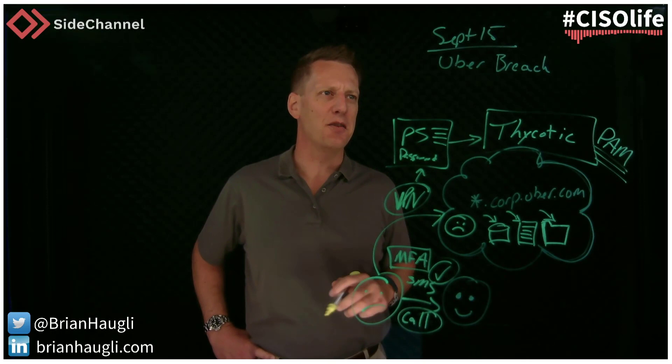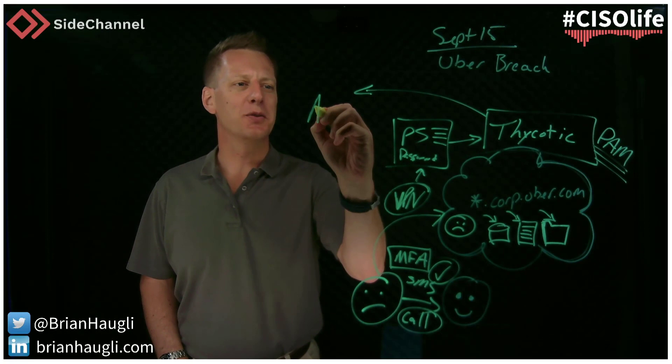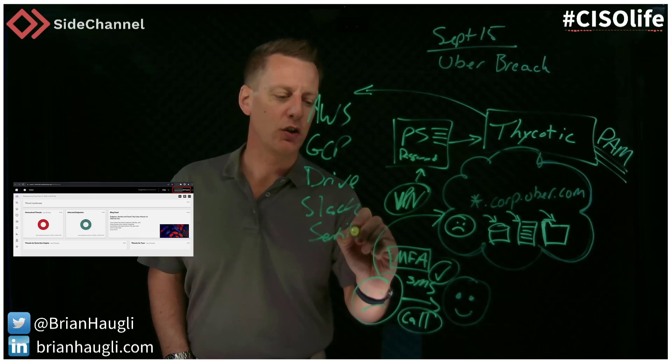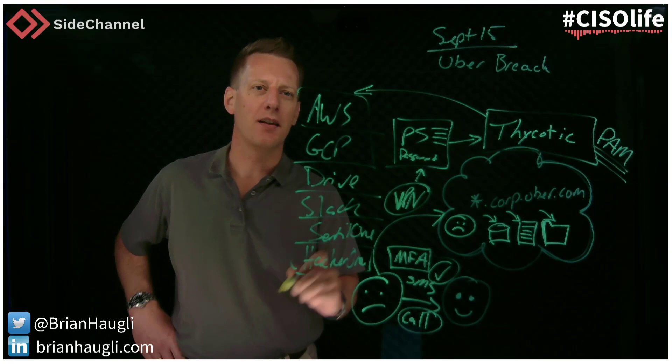With the attacker able to leapfrog into CyberArk and the PAM, they were then able to use it to access all other things within Uber's control environment — that includes their AWS environment, their GCP, Google Drive, Slack, and even some of their security platforms such as HackerOne and SentinelOne.